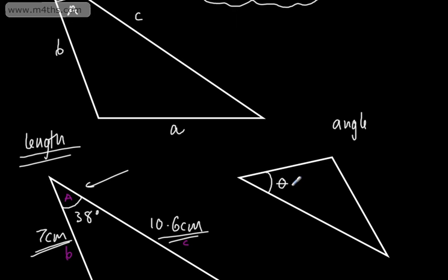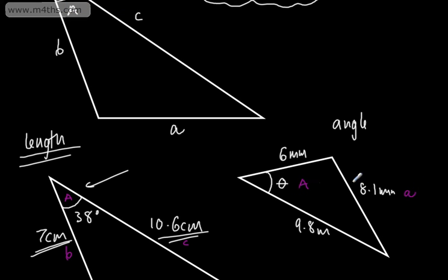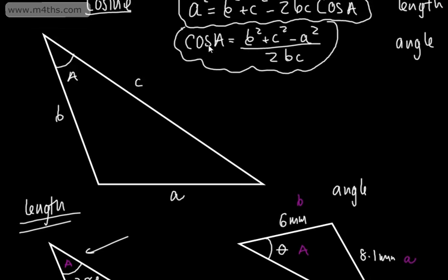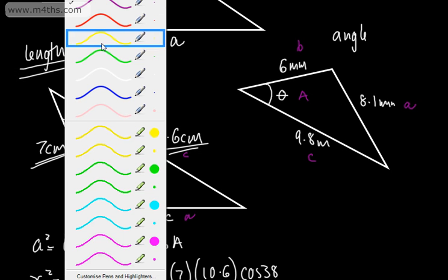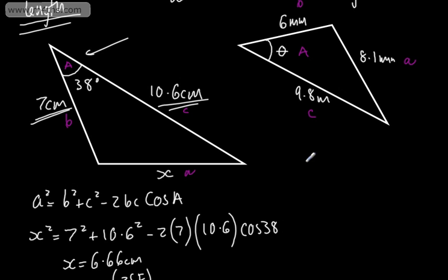We've been looking at X, but we might have theta. Let's say this side is going to be 6 millimeters, this is going to be 8.1 millimeters, and this is going to be 9.8 millimeters. All we need to do is label this up: that's big A, there's little A, this is going to be B, and this is going to be C. I'm going to use the rearranged formula: cos A equals B squared plus C squared minus A squared over 2BC.